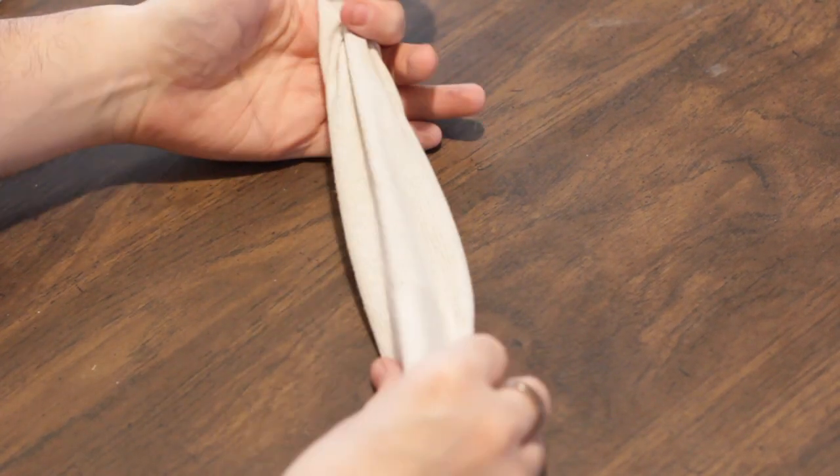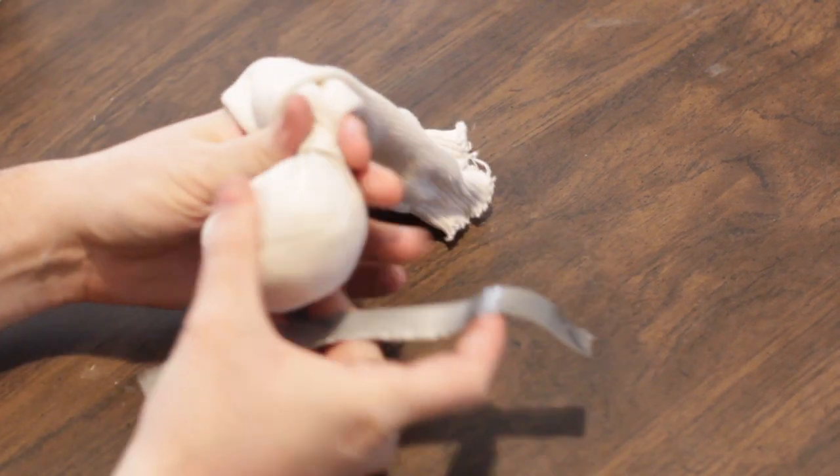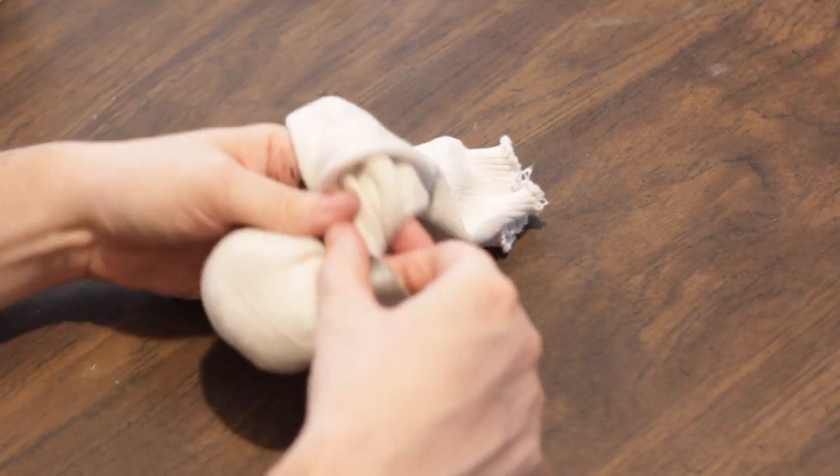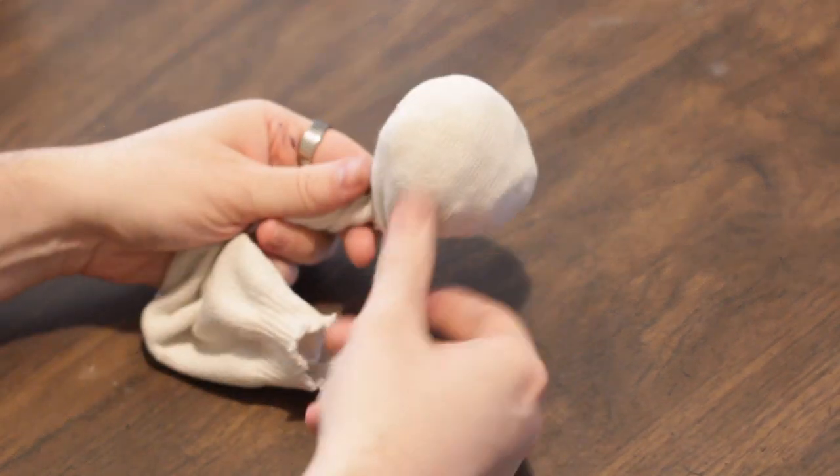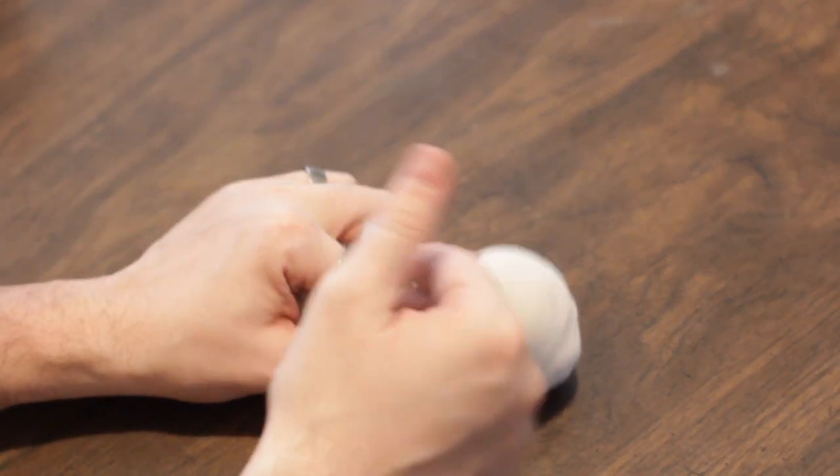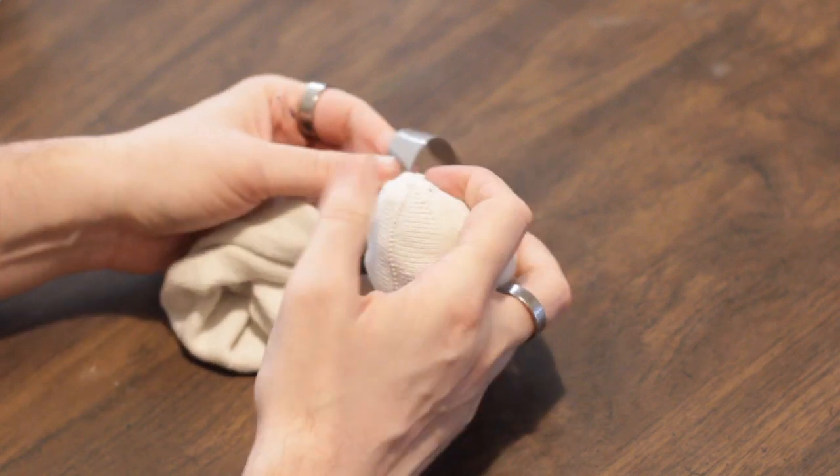You want to make it about a quarter the size of the entire length of the sock. Grab a rubber band, or in this case I'm gonna use some duct tape. I'm just gonna twist this off a little bit here and use some duct tape to hold it in place.